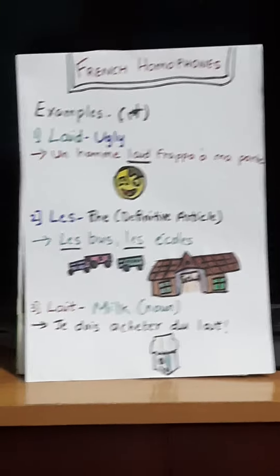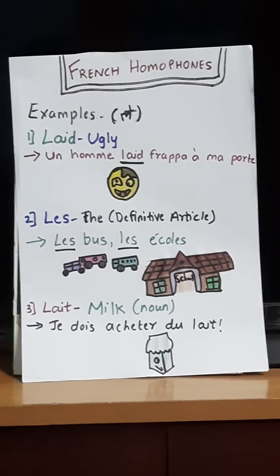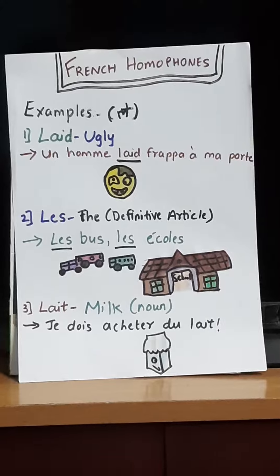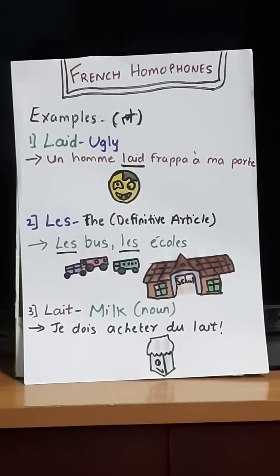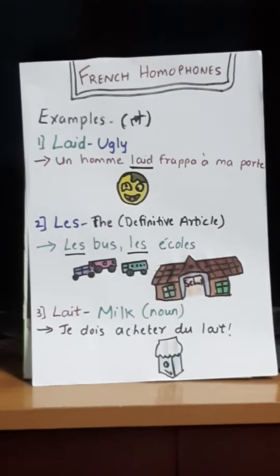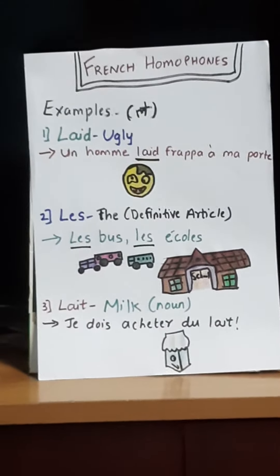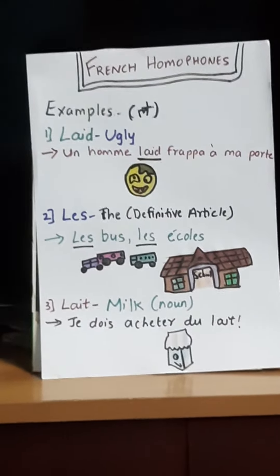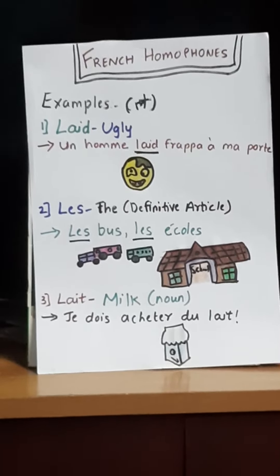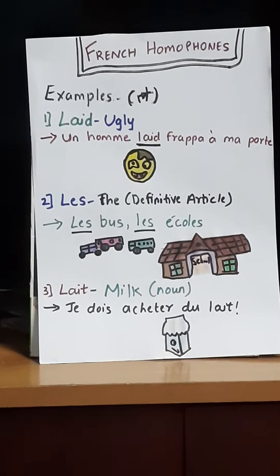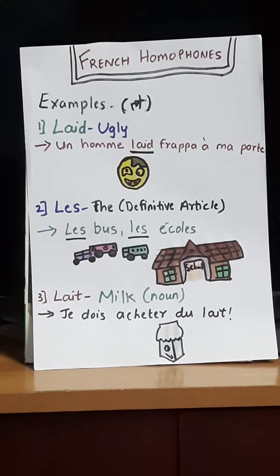Now I will show some examples. The first one: 'An ugly man knocked at my door.' Here the spelling is L-A-I-D — 'laid' — which means ugly.